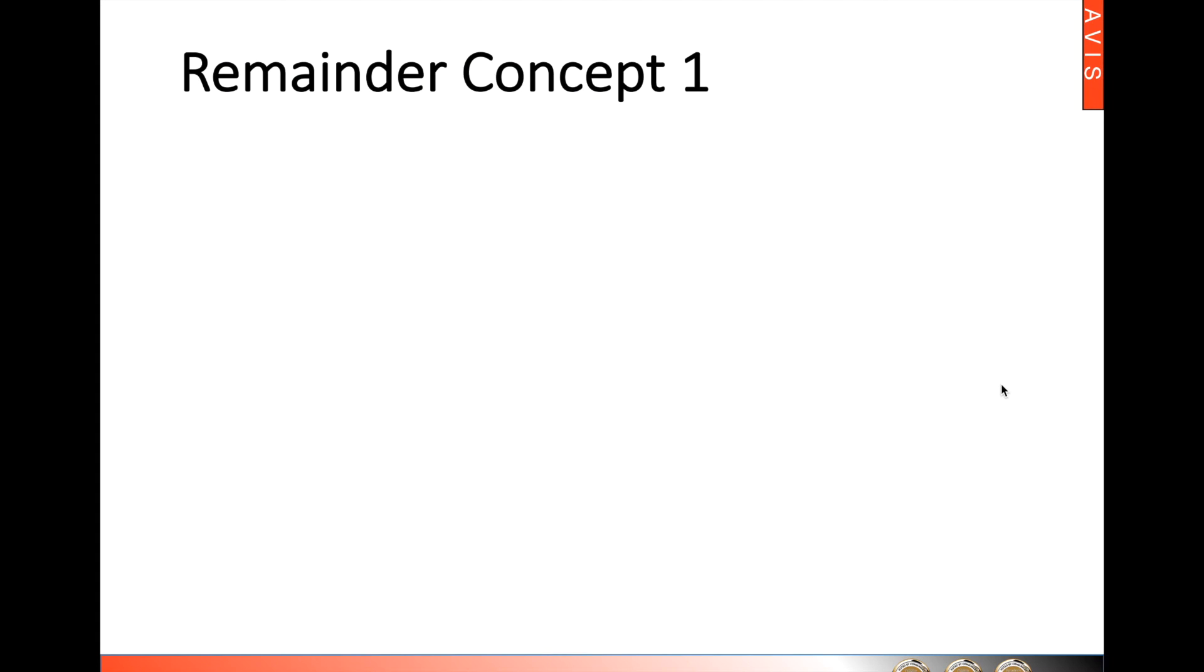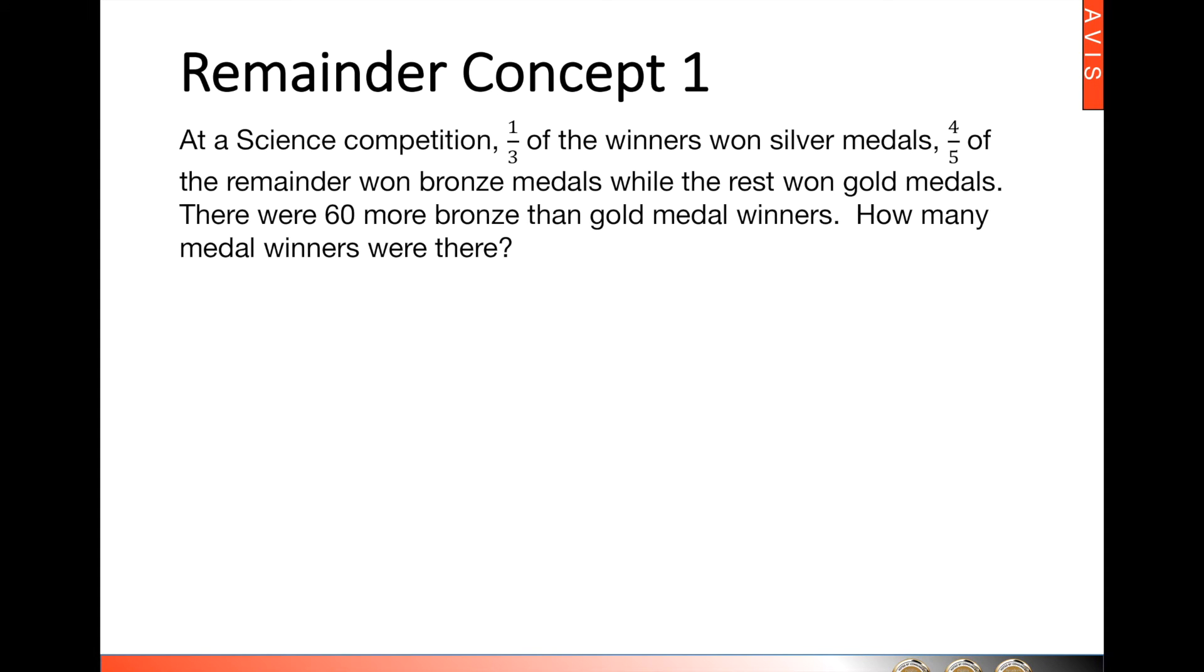So we're going to be doing our remainder concept type 1. Now let's take a look at the question. Now one of the most important words that we have to really look out for here is the word remainder. Now once we see the word remainder then we will immediately think of a remainder concept. Now in this particular question there are three variables: the silver medal winners, bronze medal winners, and gold medal winners.